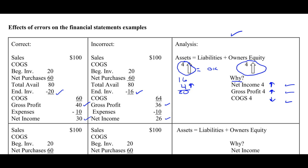Was cost of goods sold too small? Indeed it was, because here are our correct numbers and here are our incorrect numbers. So you can analyze and understand what an error in inventory did and know what its effects had to be on the financial statements, from just understanding that the balance sheet equation must be in balance.